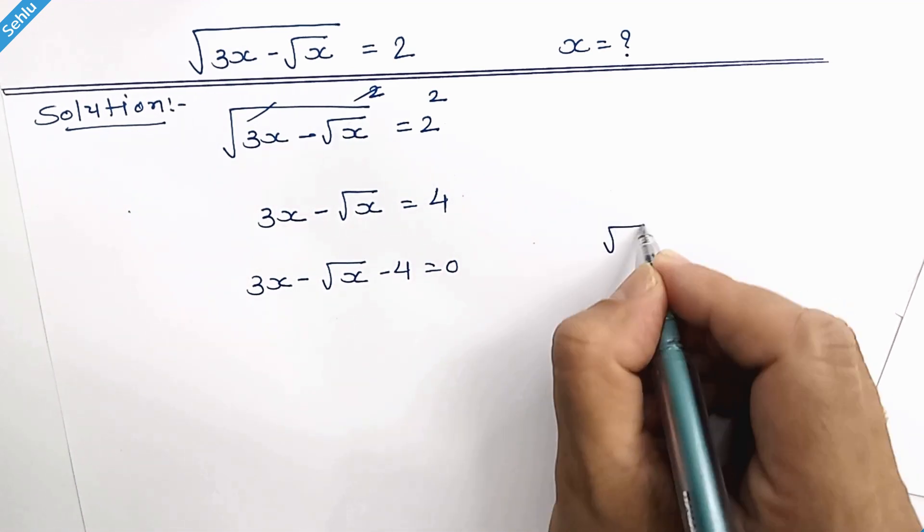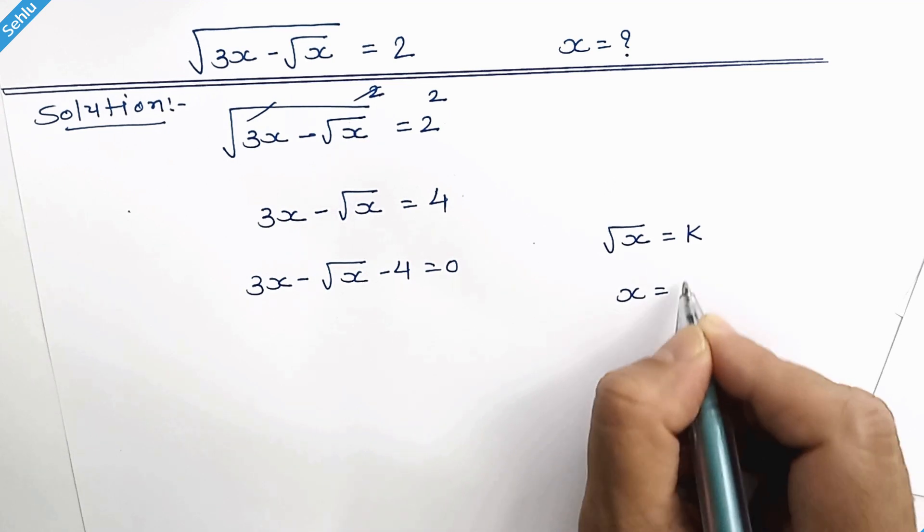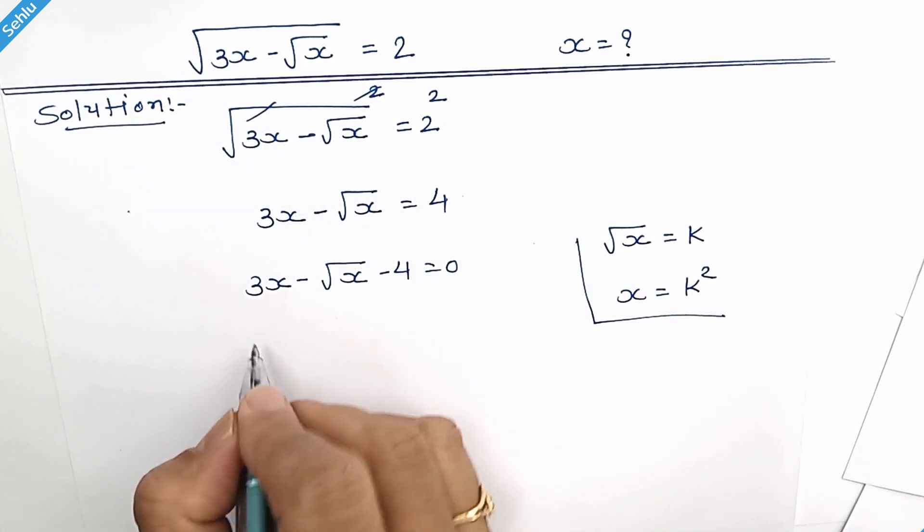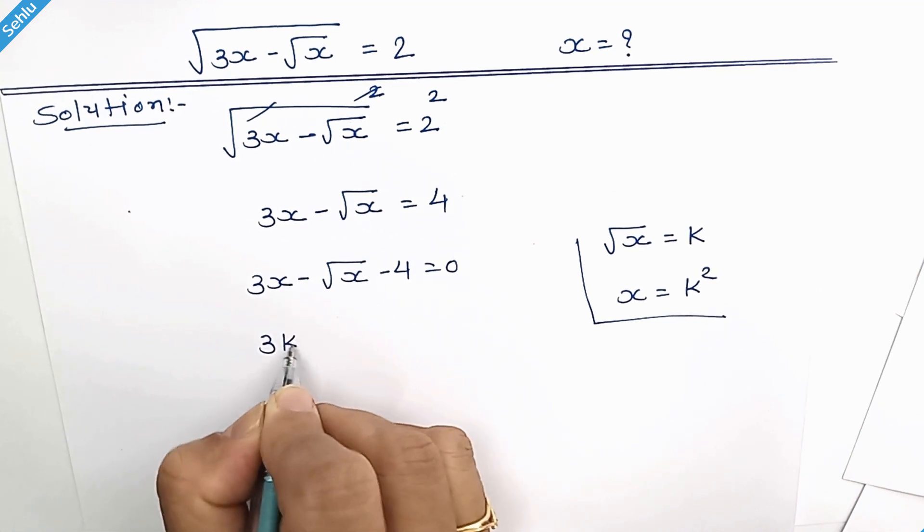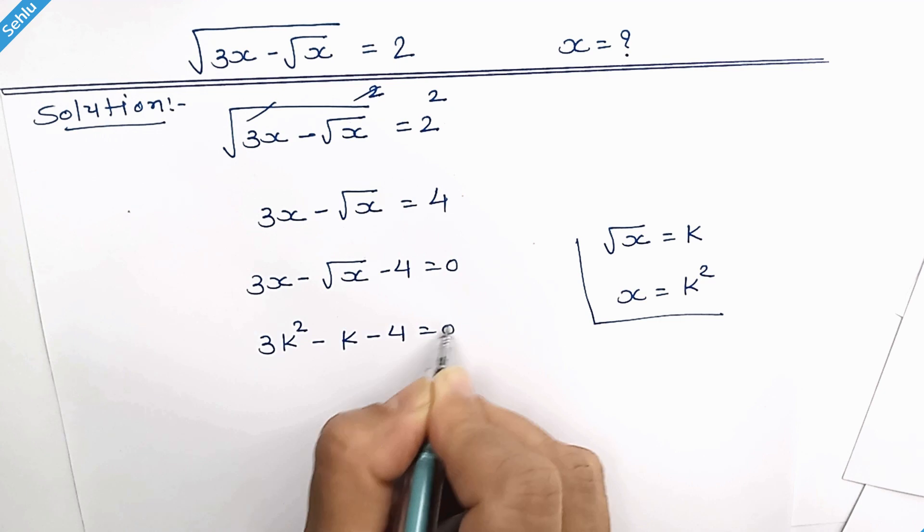Now let's take square root of x equals k. So x equals k squared. So our equation will be 3k squared minus k minus 4 equals 0.